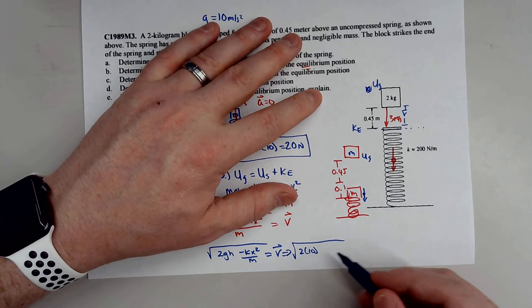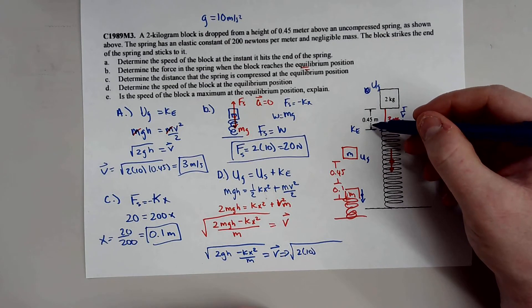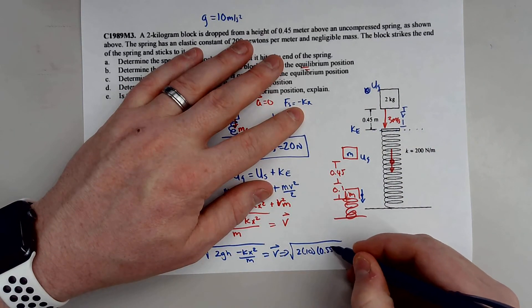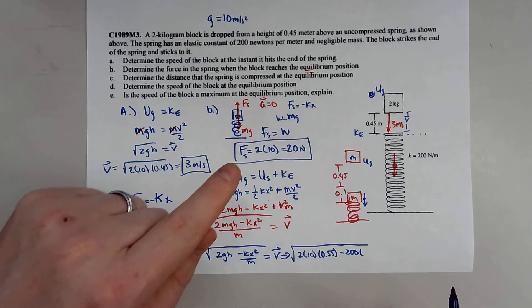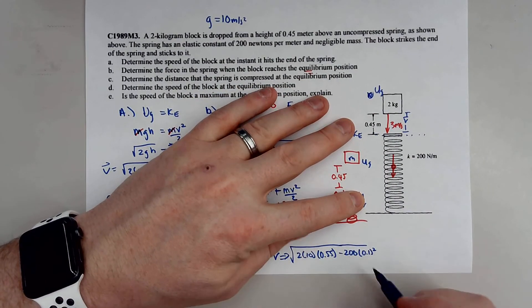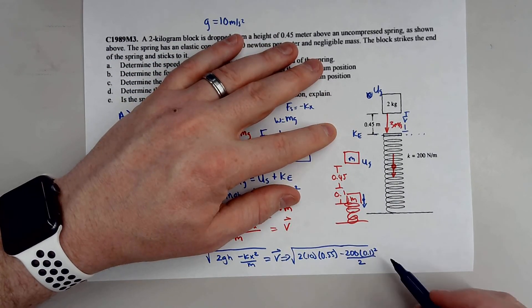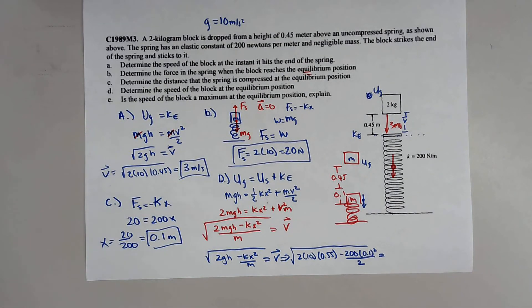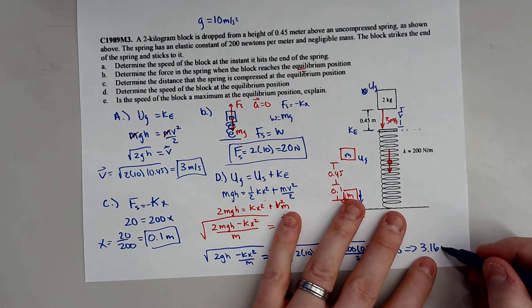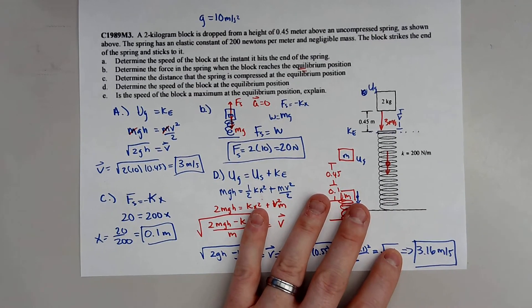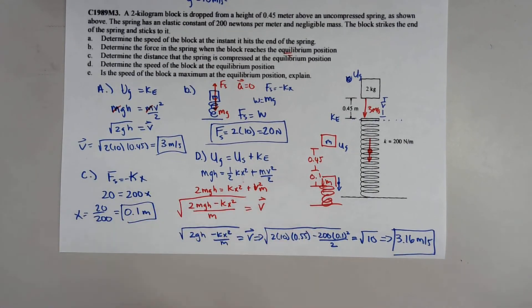So that equals 2 times 10. And the height, the height is how far this block has fallen. Please note, it fell 0.45 meters, and then it fell an extra 0.1 meters. So that's 0.55. Minus 200 times how much was that spring compressed? That spring was compressed 0.1 meters. And that's going to be over the mass of that block, 2. And typing all that into my calculator, so that's 200 times 0.1 squared, divide that by 2. That's 1. So 20 times 0.55. So it's pretty much the square root of 10. So this gives me the square root of 10, which is equal to 3.16 meters per second. And that's actually the correct answer in the document. So this block will be moving at 3.16 meters as it passes through equilibrium position.